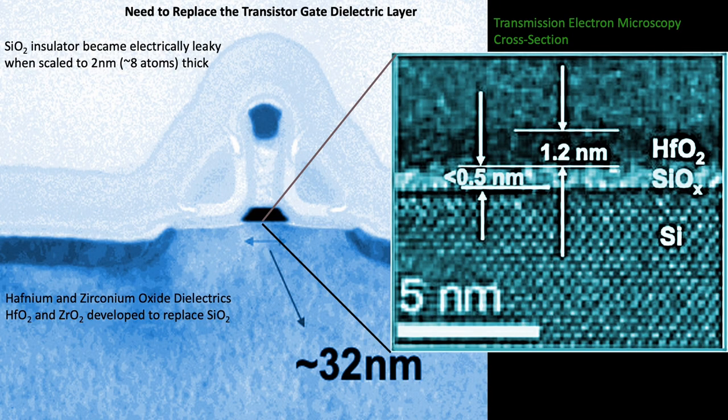A stack of 50,000 of these insulator layers is the same thickness as a human hair. We investigated metal oxides, hafnium oxide and zirconium oxide, as replacements for silicon oxide, since they are five times better insulators. But they crystallized, and the electrons can migrate along crystal grain boundaries.